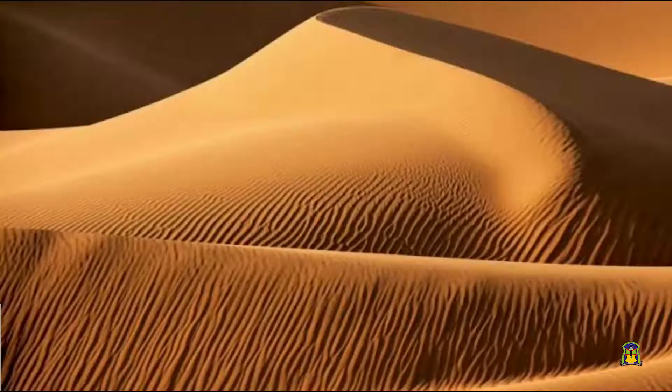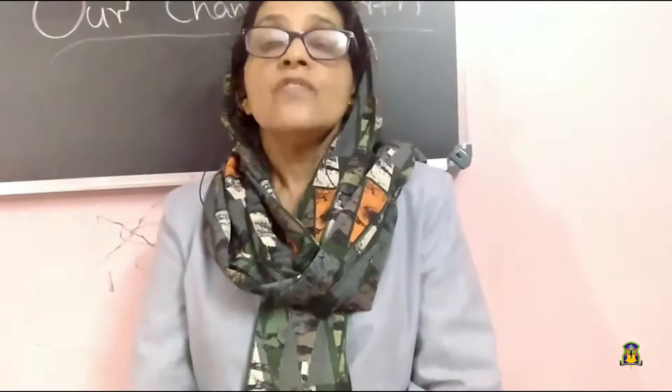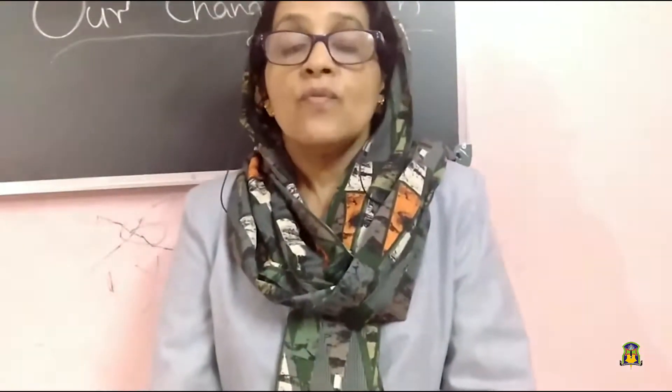These are known as sand dunes. In desert areas, when the wind blows, it deposits a lot of silt and sand, forming dune-like structures known as sand dunes. So children, we had discussed lithospheric plates, exogenic forces, endogenic forces, and all the major landforms created by rivers, sea waves, ice, and wind. Thank you.